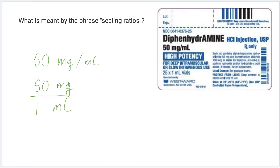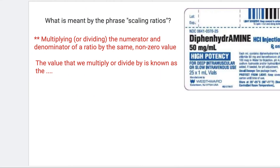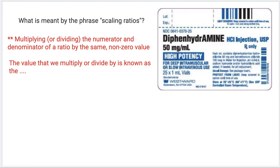A dosage calculation is truly just a proportion problem, and we can usually solve dosage calculations by scaling ratios, or at least estimate quantities and catch errors by scaling ratios. Scaling a ratio refers to multiplying or dividing the numerator and denominator of that ratio by the same non-zero value. So if I were to rewrite that ratio of 50 milligrams per 1 ml, we can find an equivalent ratio — equivalent strength — by multiplying or dividing by the same value. This value is known as the scale factor.